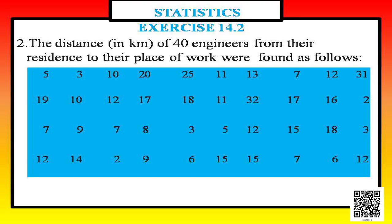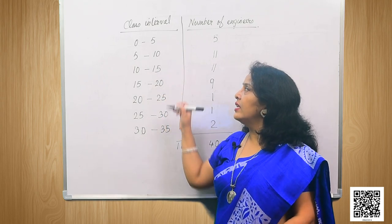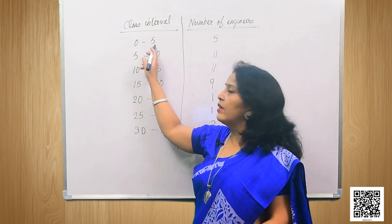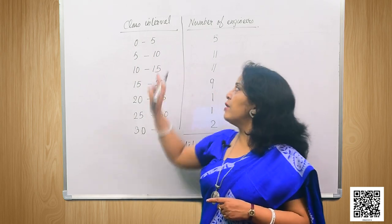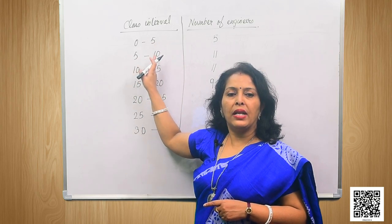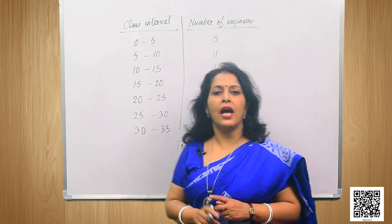Question 2: the distances in kilometers for 40 engineers from their residences to their places of work are given. Construct a grouped frequency distribution table with class size 5, taking the interval 0 to 5 (5 not included). The class intervals go from 0–5, 5–10, and so on up to 30–35, since the highest number is 32. In the group 0 to 5, we include 0, 1, 2, 3, and 4 — not 5, which goes into the next group.